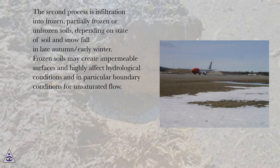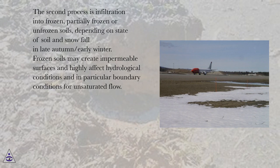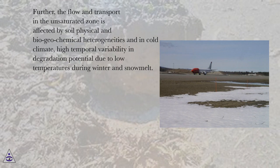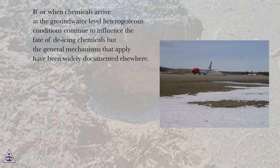The second process is infiltration into frozen, partially frozen or unfrozen soils, depending on the state of soil and snowfall in late autumn to early winter. Frozen soils may create impermeable surfaces and highly affect hydrological conditions and in particular boundary conditions for unsaturated flow. Further, the flow and transport in the unsaturated zone is affected by soil physical and biogeochemical heterogeneities and, in cold climate, high temporal variability and degradation potential due to low temperatures during winter and snowmelt. If or when chemicals arrive at the groundwater level, heterogeneous conditions continue to influence the fate of de-icing chemicals, but the general mechanisms that apply have been widely documented elsewhere.